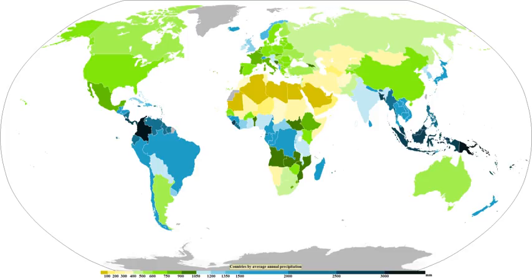Smaller drops are called cloud droplets, and their shape is spherical. As a raindrop increases in size, its shape becomes more oblate, with its largest cross section facing the oncoming airflow. Contrary to the cartoon pictures of raindrops, their shape does not resemble a teardrop. Intensity and duration of rainfall are usually inversely related: high-intensity storms are likely to be of short duration and low-intensity storms can have a long duration. Raindrops associated with melting hail tend to be larger than other raindrops. The METAR code for rain is RA, while the coding for rain showers is SHRA.